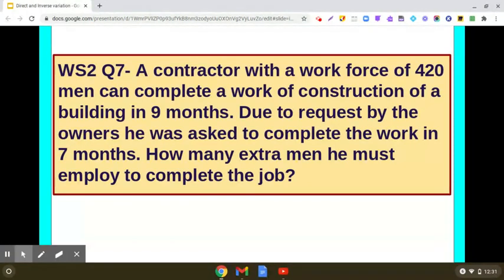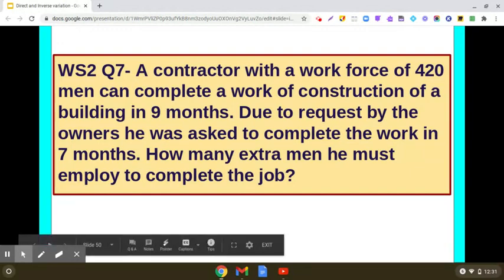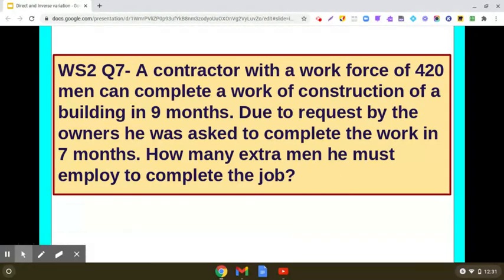First of all, we will understand whether it is a case of direct variation or indirect variation. 420 men can complete the work in 9 months, but there is a need to finish the work in 7 months. So obviously, more number of people should be employed. So this is a case of inverse variation.